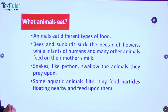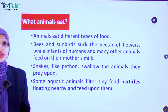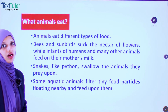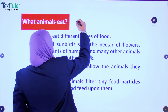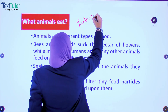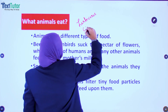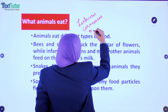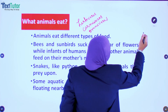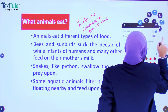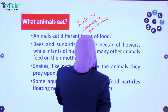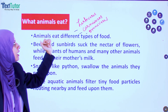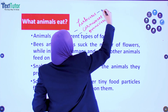What do animals eat? Different animals eat different kinds of food. We will learn about categories of food. Herbivores are those animals which eat only plants. Carnivores are flesh-eating animals.